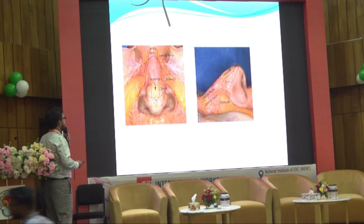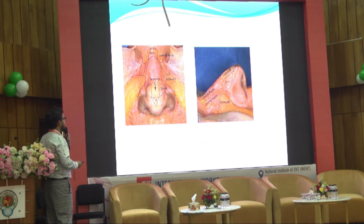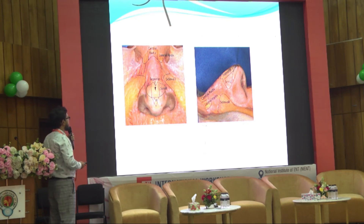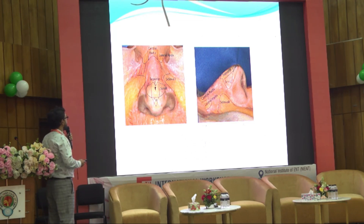In the lateral view, we see the radix area — there is the central radix area and the lateral radix area. This is the scroll area, supertip, and tip area.